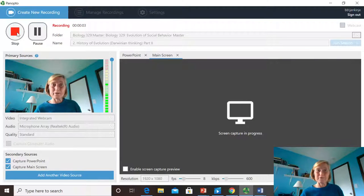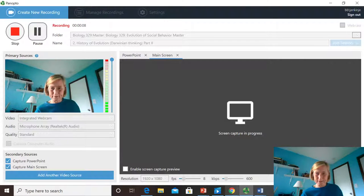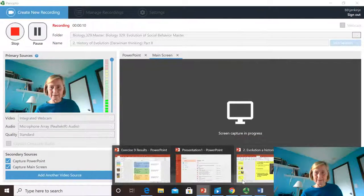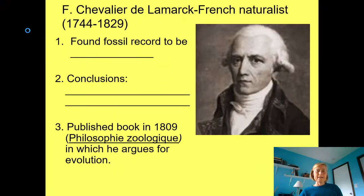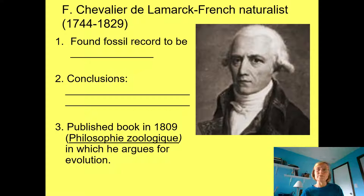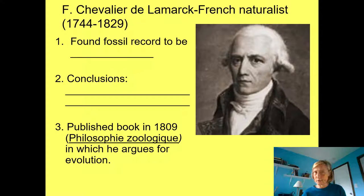This is part two of the history of evolution or Darwinian thinking. We're talking about some of the important people in history that helped Darwin to develop the theory of evolution, or the mechanism of evolution that he came up with.